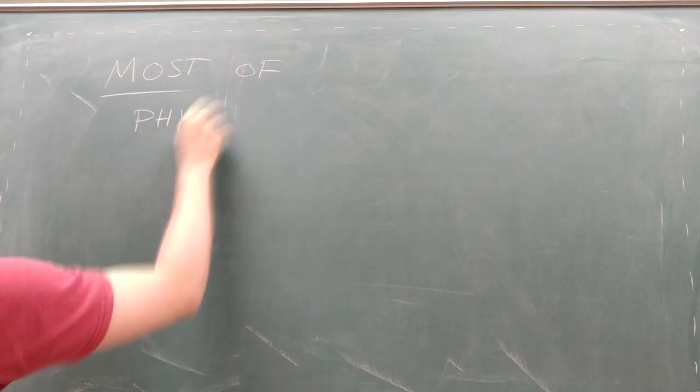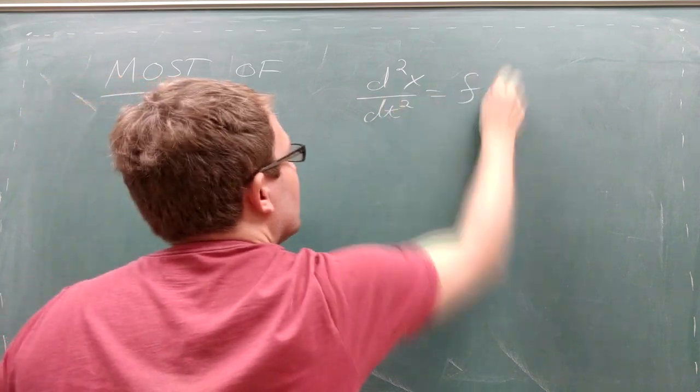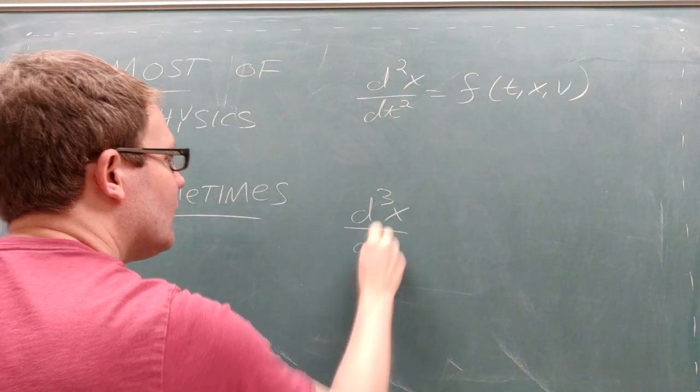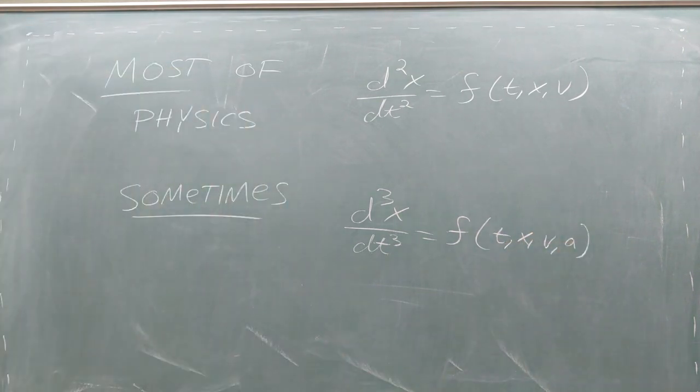Although most physics problems involve a second-order differential equation, you might occasionally come across a third-order differential equation. We call the third derivative of position the jerk, and we can incorporate it into our Runge-Kutta code easily.